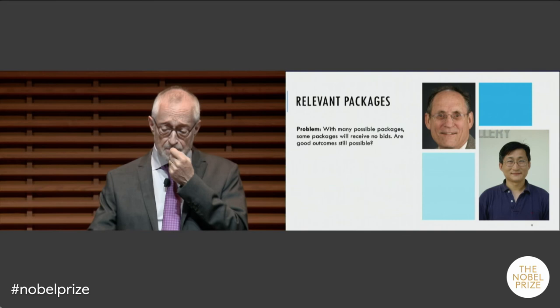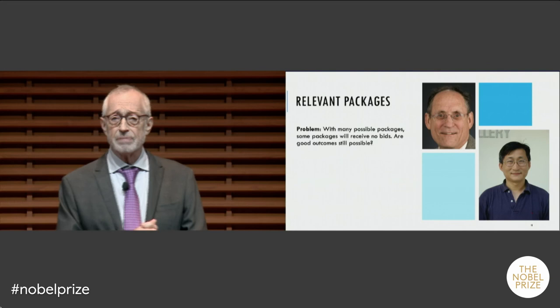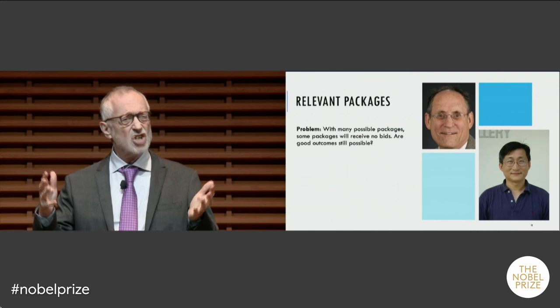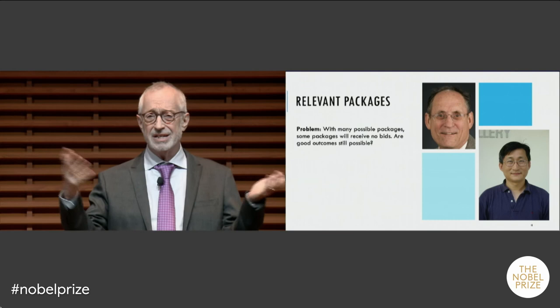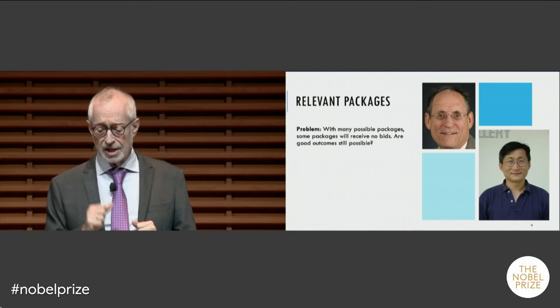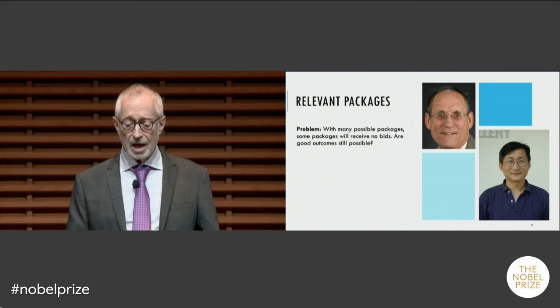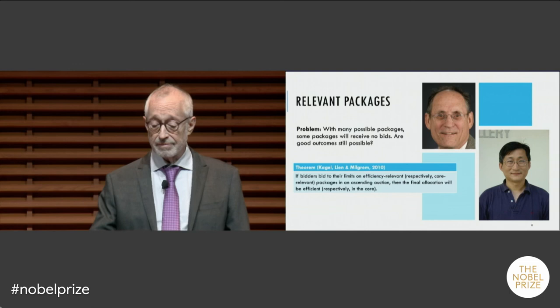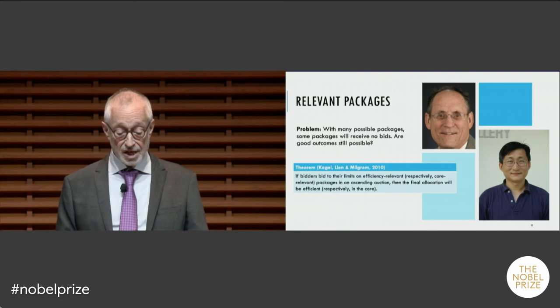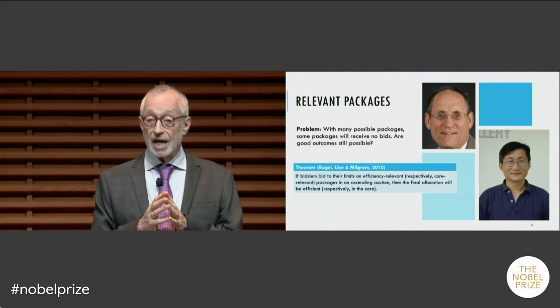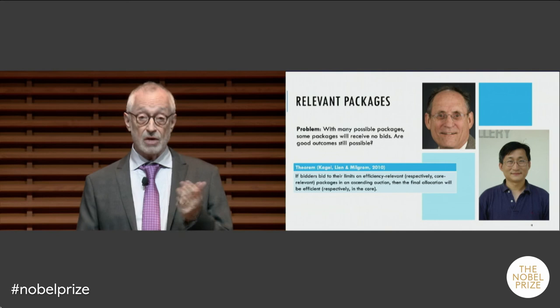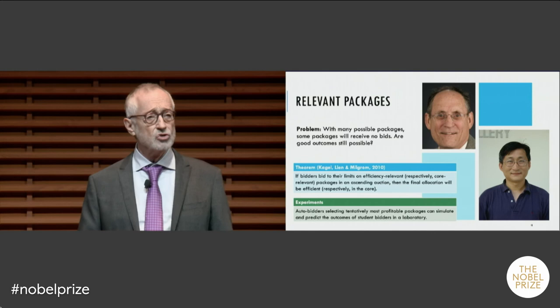Package bidding is a hard problem because with 100 licenses there are 2 to the power 100 possible combinations — far too many to bid on in practice. Together with John Kagle and Yen-Chi Lin, we showed that if bidders bid up to their limits on relevant packages, you can get efficient allocations or core allocations from this bidding. We also showed that simulations with auto-bidders can predict how bidders would bid and identify relevant packages emerging from different auction designs.